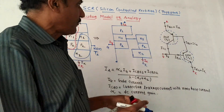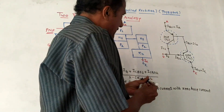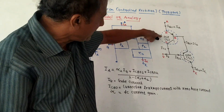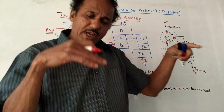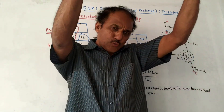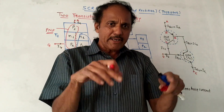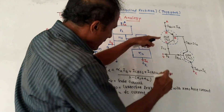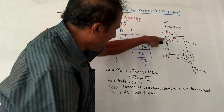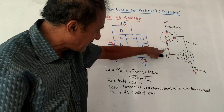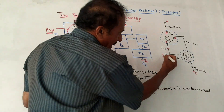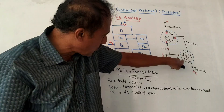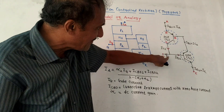Observing the connection carefully: in the PNP transistor T1, the terminals are emitter, base, and collector. The gate terminal carries current IG. Current IC1 comes out from the collector of T1, combines with IG, and forms the base current IB2 for transistor T2. So IB2 can be controlled by controlling IC1 and IG.